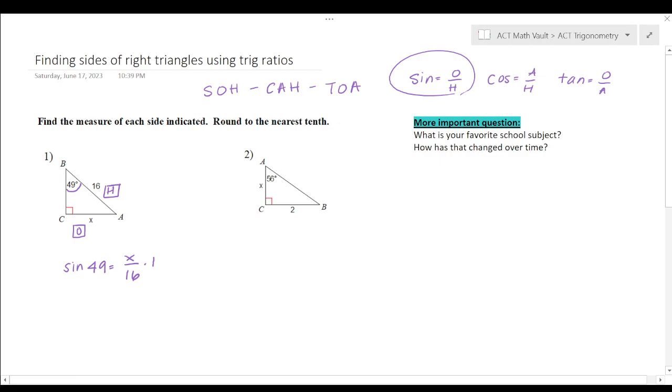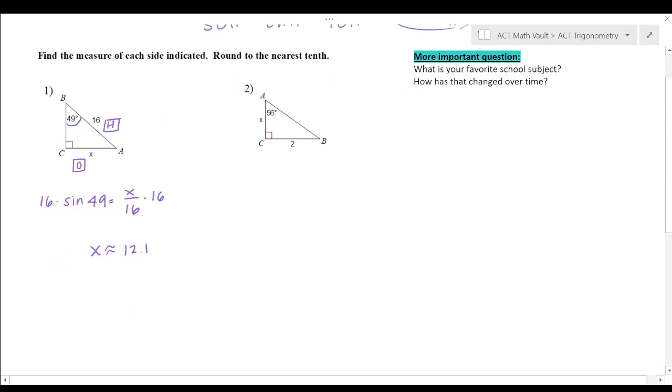Which is 49 here, so sine 49, and then O over H, X over 16. Then we're going to figure out what are we going to do on both sides. I could multiply 16 on both sides to get X by itself. Remember that my answers here when I click that sine button on the calculator, it's going to be sine of something. So sine 49 times 16, I'm getting 12.1.